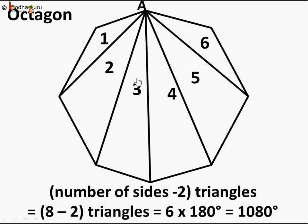An octagon has eight sides and we get six triangles. Eight minus two equals six. So the pattern is: the number of sides in a given polygon minus two gives the number of triangles. Therefore, the sum of interior angles is the number of sides minus two, multiplied by 180 degrees. For an octagon that becomes six times 180 degrees, which is 1080 degrees.